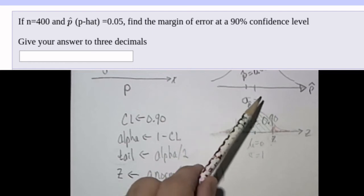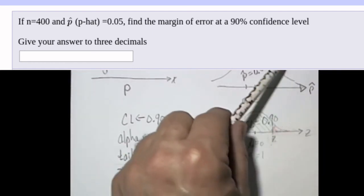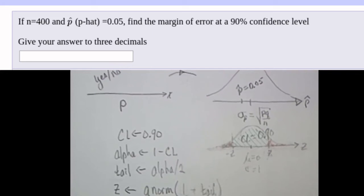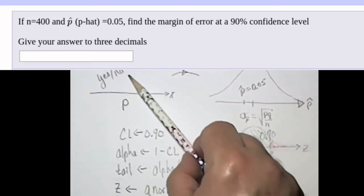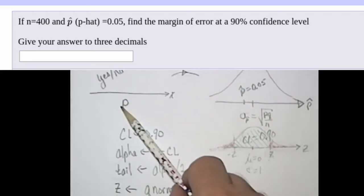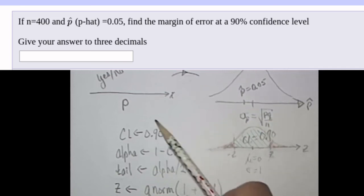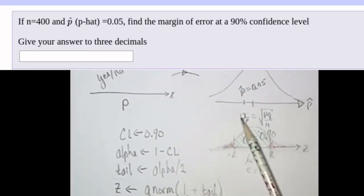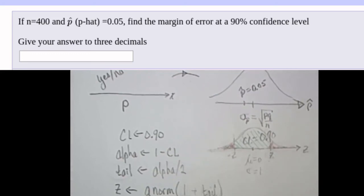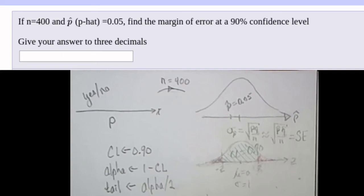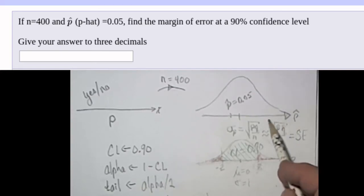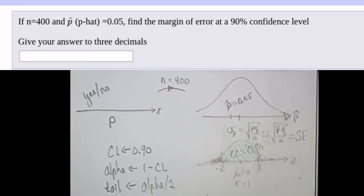Now I'm going to need to know the standard deviation of this distribution of sample proportions. It's known that that amount is the square root of P, the probability of success here, times Q, the probability of failure. Q is always 1 minus P, divided by the sample size. The problem is we don't know what P and Q are. So the best that we can do is approximate that by using P hat times Q hat divided by N. So that value, that approximation for this standard deviation, is sometimes called the standard error.